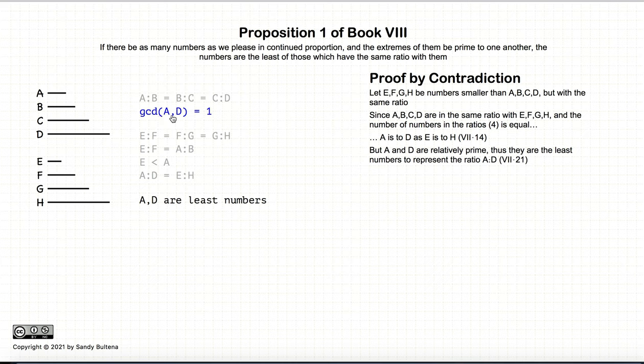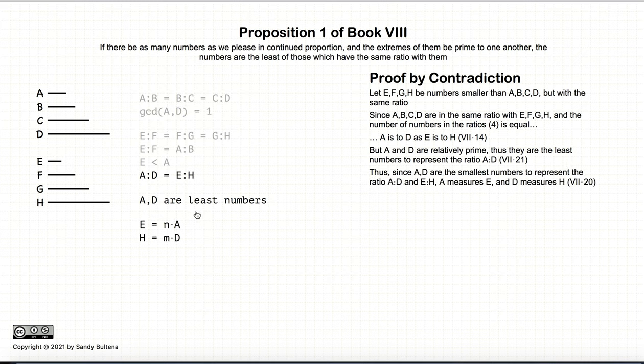Now we know that A and D are relatively prime, that's part of the definition, so according to Proposition 21 of Book 7, A and D are the least numbers in this ratio. In other words, there's no numbers that are smaller than A and D that have this ratio.